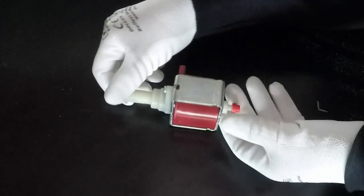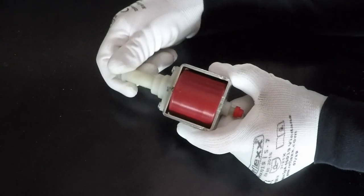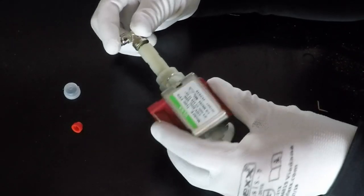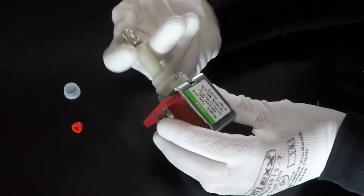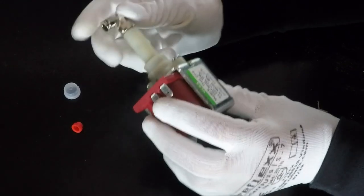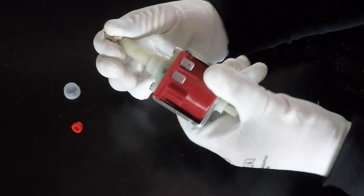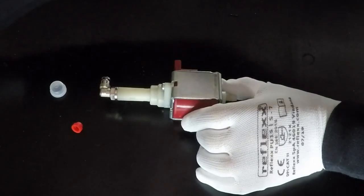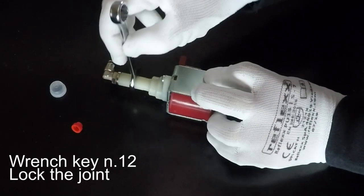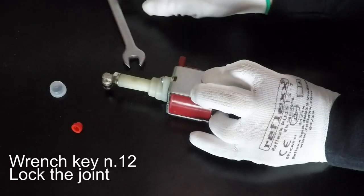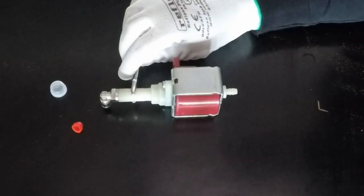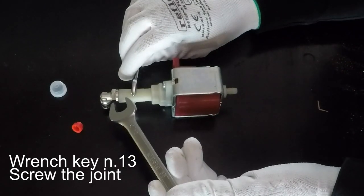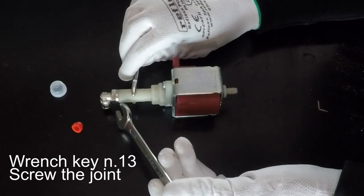Remove the protection from the hands of the new pump. Insert the new fitting. Lock it with the wrench key number 12. Take the wrench key number 13 and screw the fitting, taking care to not apply too much force.